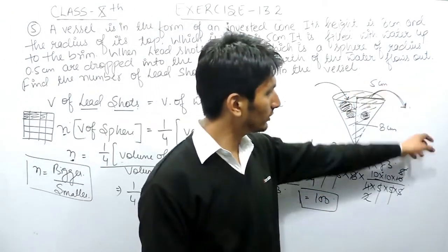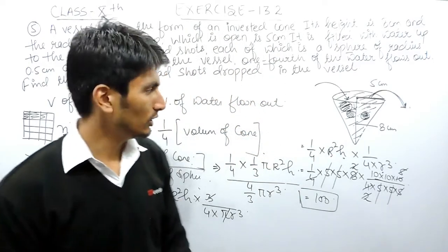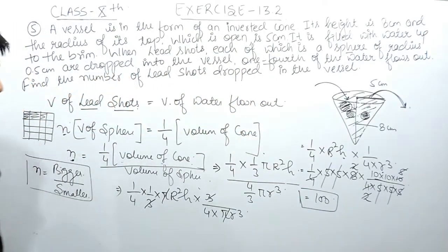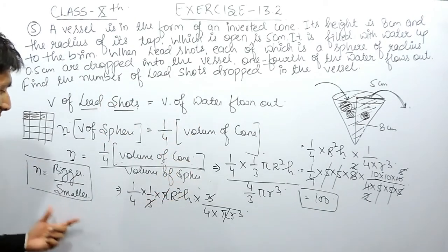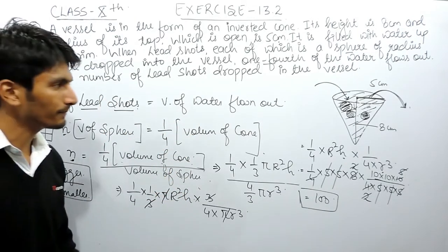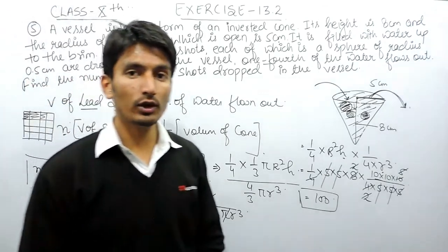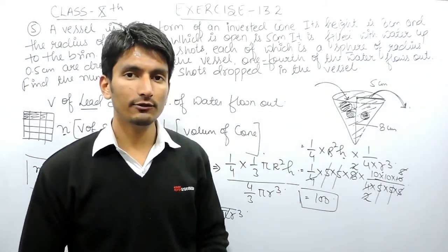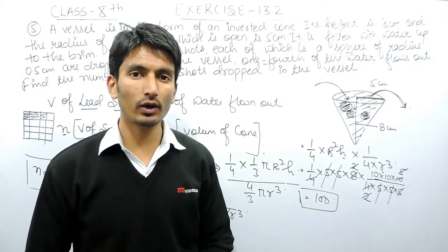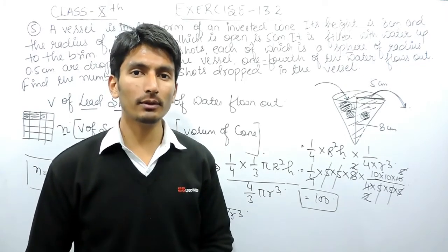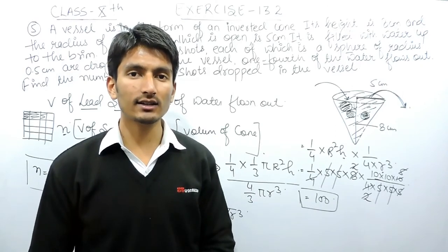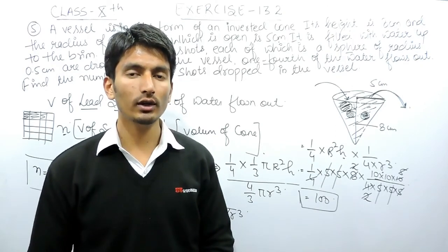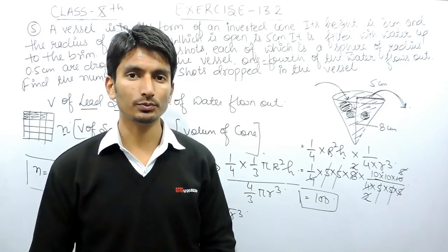So one-fourth of the water flows out, and this is how you solve this particular question. This is the important formula, and I have shown you how it is formed. I hope you understood how to solve this question. If you like this video, please subscribe to our channel. If you have any problem in maths, you can directly contact us — the phone number, email address, and WhatsApp number are given below in the description. Thank you.